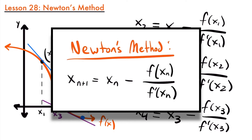Here's Newton's method in its general form. If we want to find a value of x closer to our actual x-intercept, x sub n plus 1, we take our previous value x sub n and subtract that value of x evaluated in our function divided by that value of x evaluated on the derivative: x sub (n+1) = x sub n minus f(x sub n) divided by f prime(x sub n).